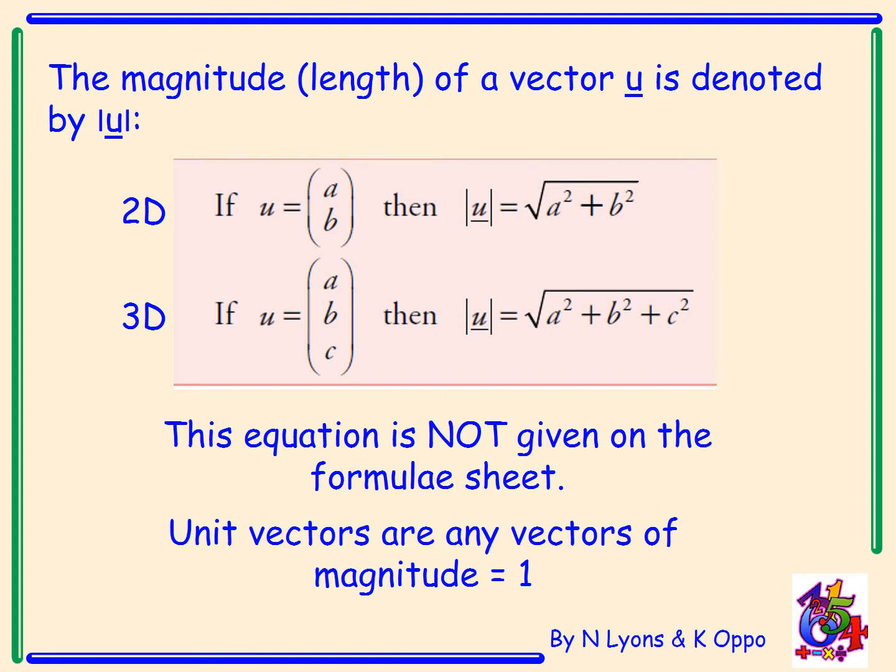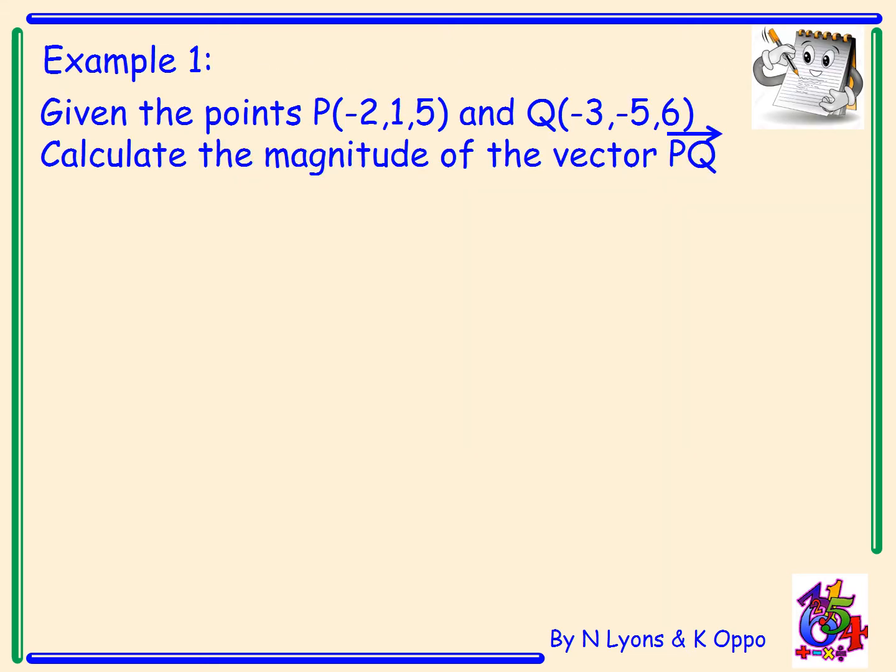Now a unit vector, they are just vectors of magnitude equal to one, of length one, one unit. So let's try example one. Given the point P with coordinates minus 2, 1, 5 and another point Q with coordinates minus 3, minus 5, 6, calculate the magnitude of the vector PQ.